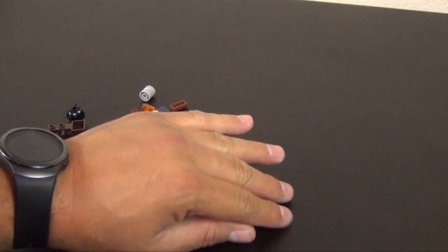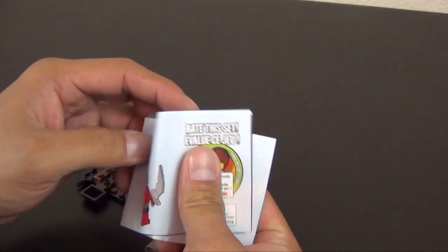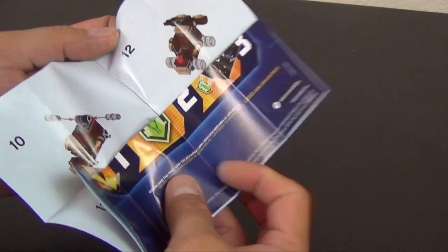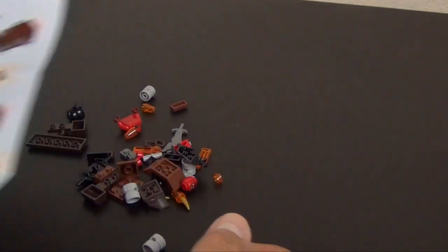So there's our contents. We do have a single instruction sheet. It's really not a book because you can see as I unfold it, it becomes just a single sheet.